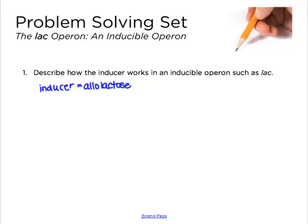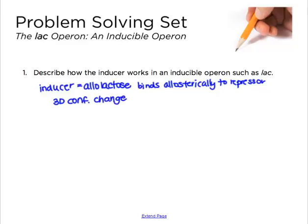Allolactose binds allosterically to the repressor protein, and this binding actually changes the 3D conformation of the repressor and makes it inactive.